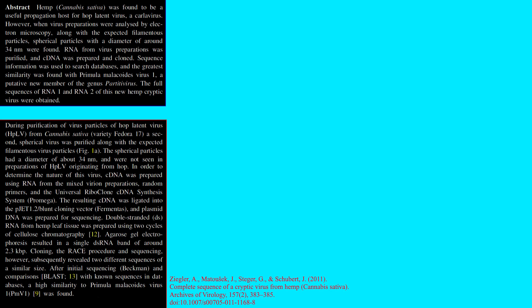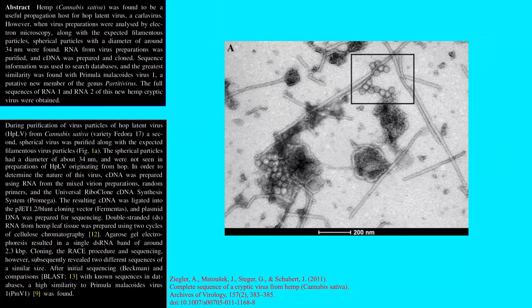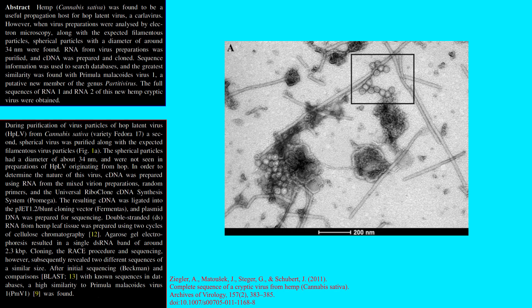Cannabis cryptic virus was found concurrently and unexpectedly in hemp cultivars infected with hops latent virus under research conditions in 2011.